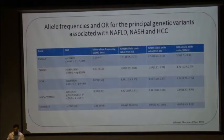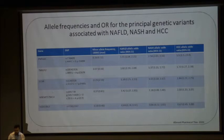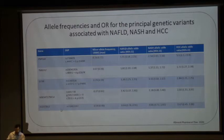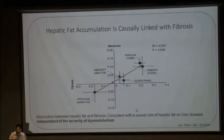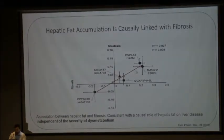These are the allele frequencies and odds ratios associated with varying genes in NAFLD, NASH, and hepatocellular carcinoma. PNPLA3, TM6SF2, glucokinase regulator gene, and MBOAT7 in complex with transmembrane channel 4 have been shown to predispose to the risk of NAFLD, NASH, and HCC. Hydroxysteroid dehydrogenase 17-beta-13 gene (HSD17B13) has been shown to be protective in the pathogenesis of NASH. This shows a causal relation between steatosis and fibrosis: as steatosis increases with modulation of this gene, there is an increase in risk of fibrosis, demonstrated using Mendelian randomization.